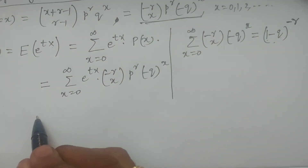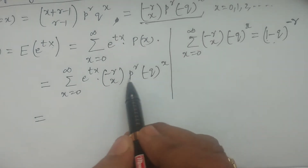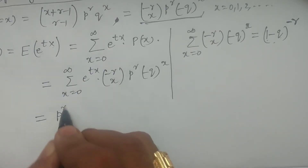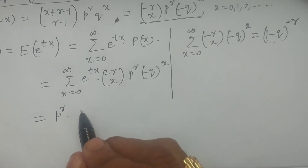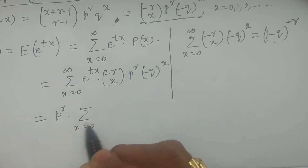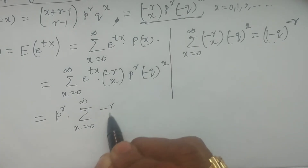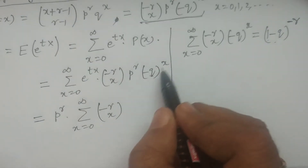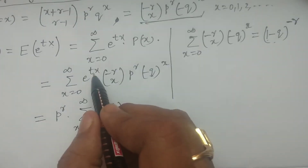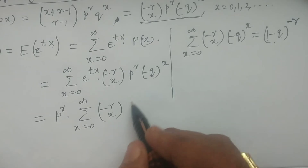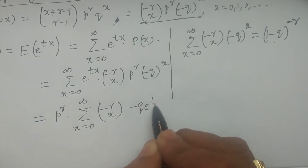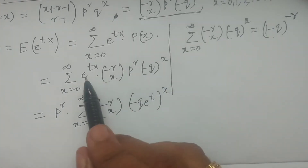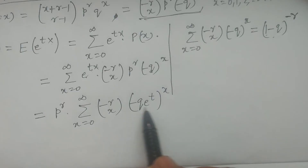Coming back to the MGF expression, since p to the power r is a constant, I take it outside the summation. The remaining summation from x equals 0 to infinity is (−r C x) times (−q) to the power x times e to the power tx. Writing e to the power tx as (e to the power t) to the power x, I combine the two terms as (−q × e to the power t) to the power x.